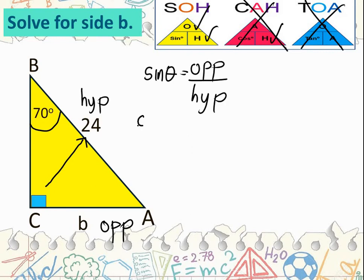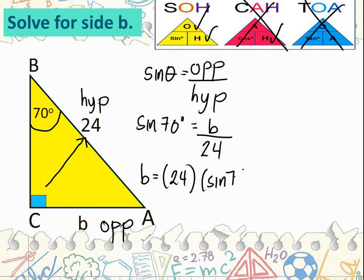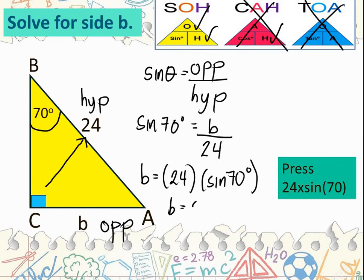Now substitute the measurements. Sine of theta, theta is 70 degrees, equals the opposite which is b, all over the hypotenuse 24. What's missing is the numerator, therefore our operation is multiplication. B equals 24 times sine 70 degrees. How do we enter this in the calculator? B equals 22.552. Two decimal places, therefore b equals 22.55 units.